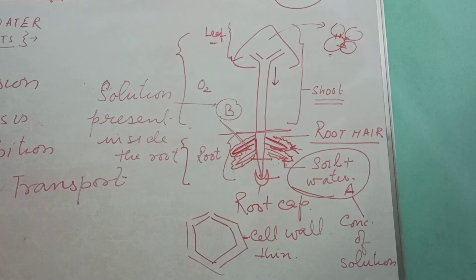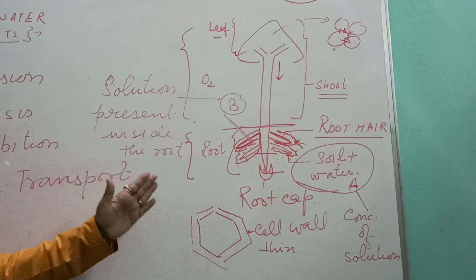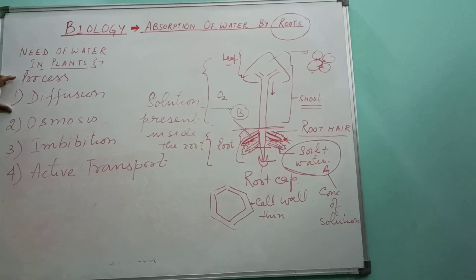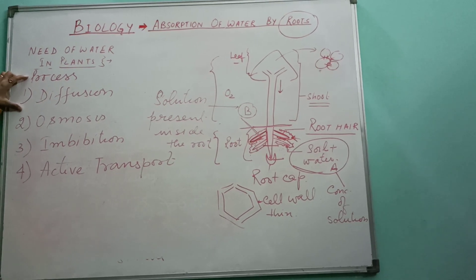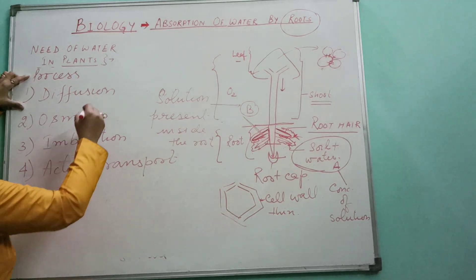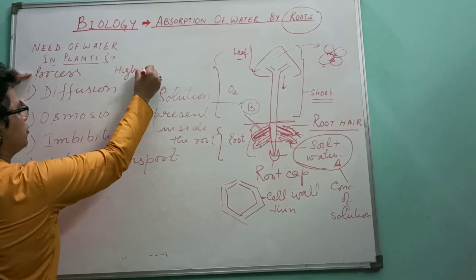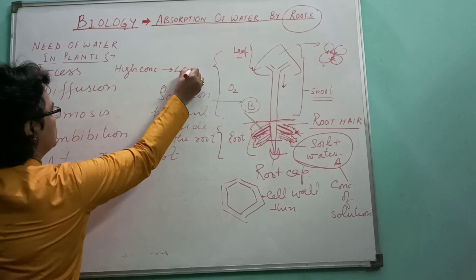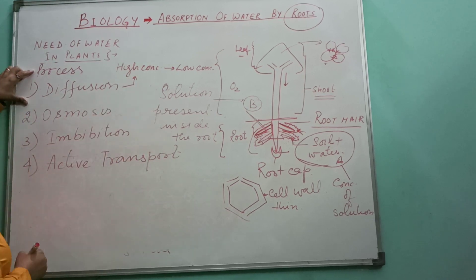Number one: diffusion. This is a simple, passive movement, and movement always occurs from a high concentration of matter to a low concentration of matter — that is diffusion.